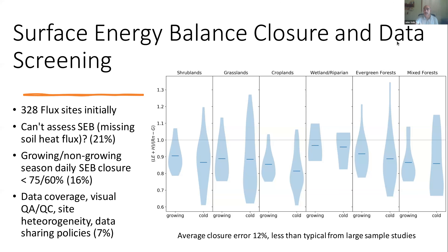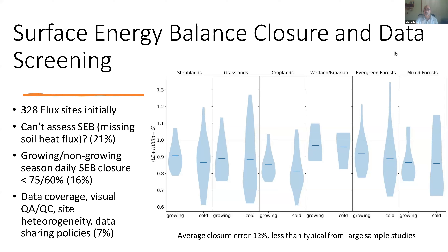We found a variety of distinct results of energy balance closure based on land cover types, and more variability in the cold non-growing season versus the growing season. The final dataset included around 194 stations across the United States and around 243,000 daily ET observations, covering a variety of land cover and crop types. This data was also put online and is publicly available, including graphics of daily and monthly flux data, ET data, reference ET, and meteorological data at the sites.